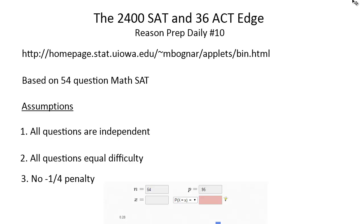What do I mean by the 2400 SAT and 36 ACT edge? That's what I'm going to explain in this video. The basic idea is in order to get a 2400 on the current SAT or 1600 on the new SAT or 36 on the ACT, what you have to begin to appreciate are the small edges, the small habits, the small strategies, the small frames of mind that may not seem very significant and may seem like something you could overlook or not pay much attention to, but actually have a huge impact on your chances of getting that perfect score.